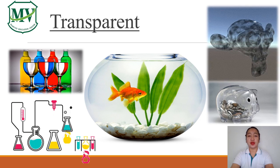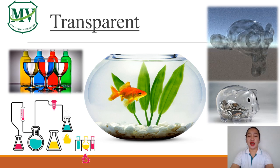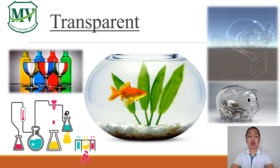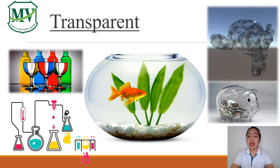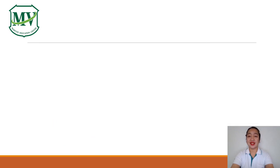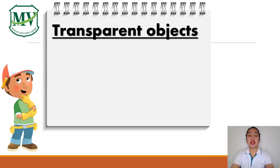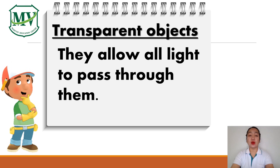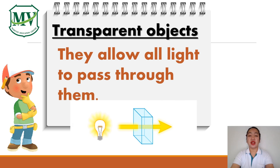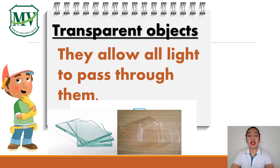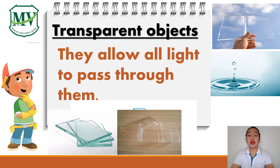Now, transparent. From the word transparent, what comes into your mind? Yes, it is clear — meaning we can see everything. Transparent objects are the ones that allow all light to pass through them. That is why we can clearly see the image or the inside of transparent objects. Examples of transparent objects are clear glasses, clear plastics, and even water.